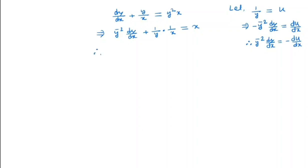By substituting we get -du/dx + u · 1/x = x. So by simplifying this we get du/dx - u/x = -x, which is the general form of a first order